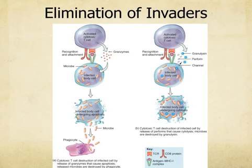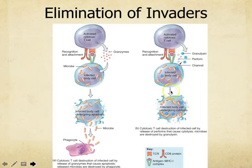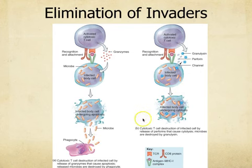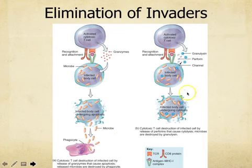Another tool is perforin and granulysin. The perforin pokes holes into the cell membrane of the infected cell, and then the granulysin causes everything inside the cell to basically self-destruct — breaking everything else down. In this case, you don't necessarily need macrophages or phagocytes to come along, because the microbes are actually destroyed in the process of also killing the cell.